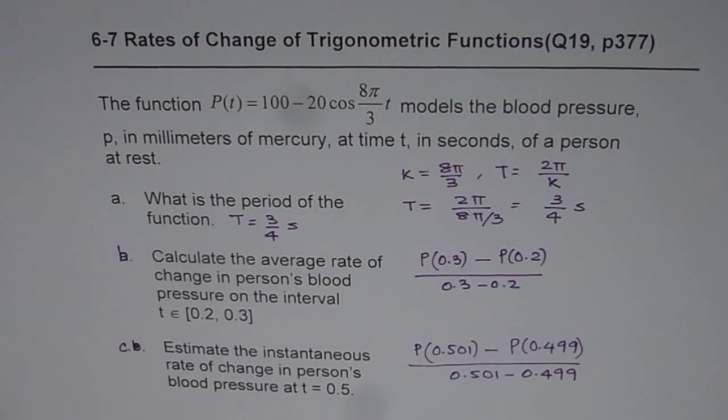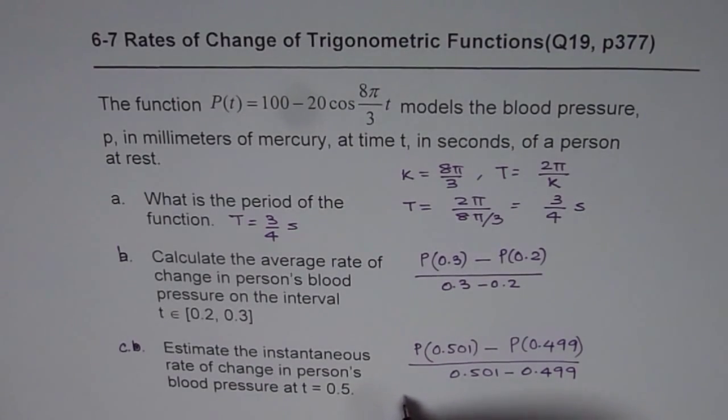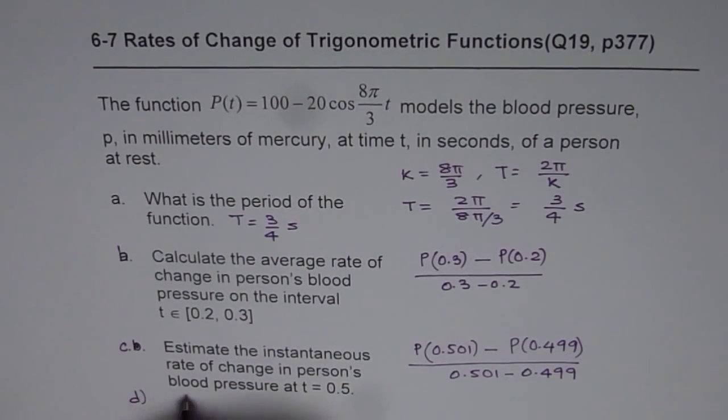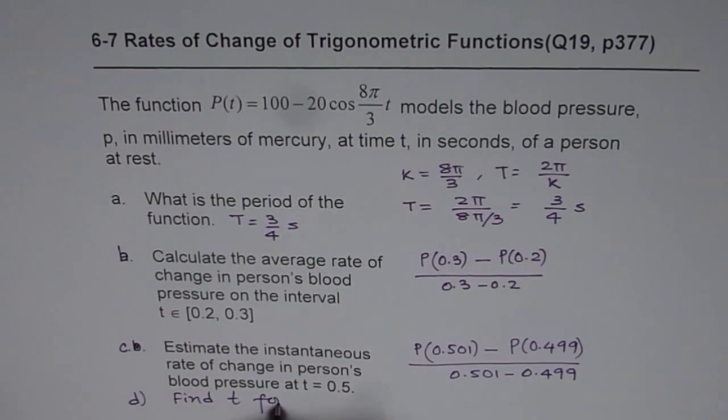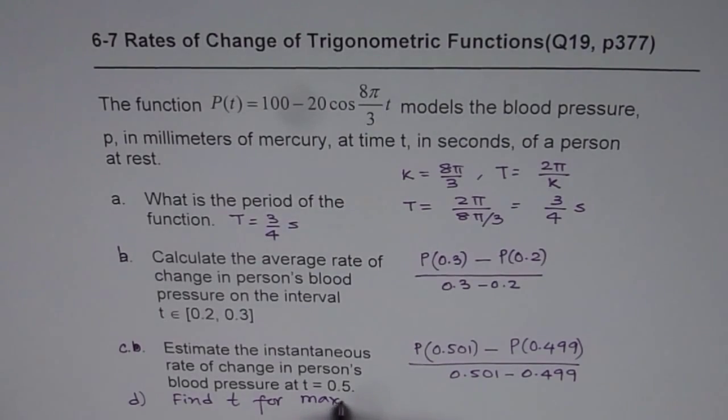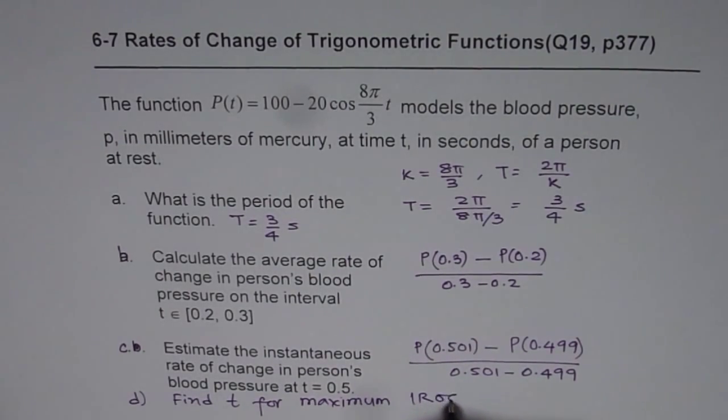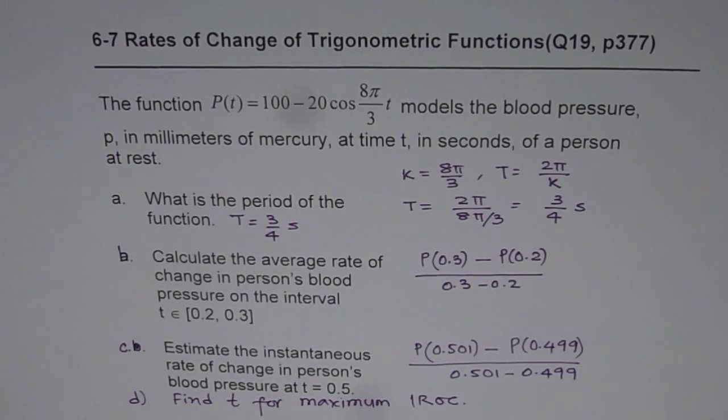where you should be expecting maximum instantaneous rate of change. So let me add that part here. So part D will be find T for maximum instantaneous rate of change. So to give you a hint on that part, I'll kind of sketch the function and show you.